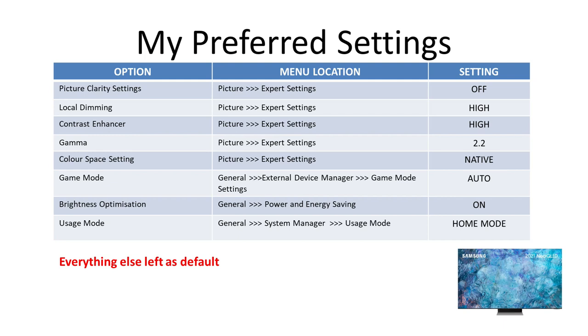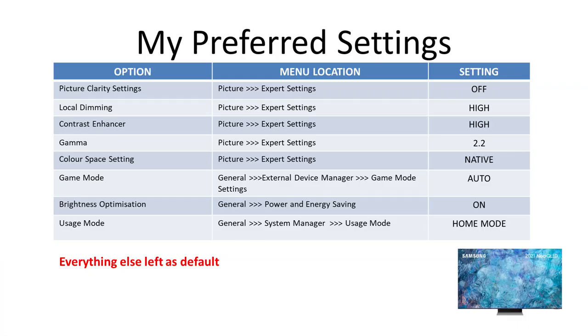Next is Local Dimming. This setting controls the brightness of individual areas on screen to automatically maximise contrast. It works very well for movies and mixed content. You may experience annoying light blooming around bright objects such as subtitles, so if that's noticeable and it bothers you, you can adjust this feature. I set this to High. Next is Contrast Enhancer — a picture-processing algorithm designed to prevent excessive light and dark areas on screen. This works really well in my opinion, and I have this set to High.